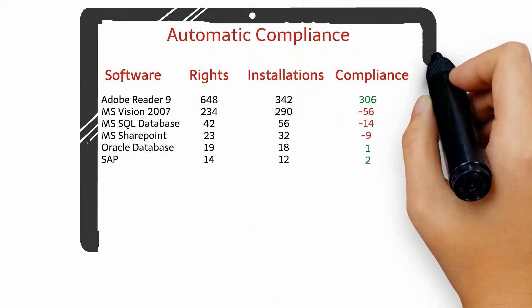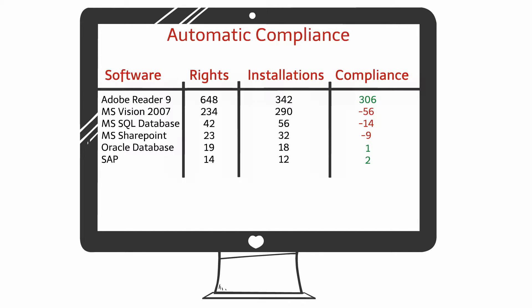Here is another simple example. You can see that you are under-utilizing some software, which means you are overpaying for your annual support, and over-utilizing some software, which means that you will either have to pay or decommission its use. Either way, it's to your benefit to know what you have in use and contracted for, so that you can make accurate business decisions for your company.